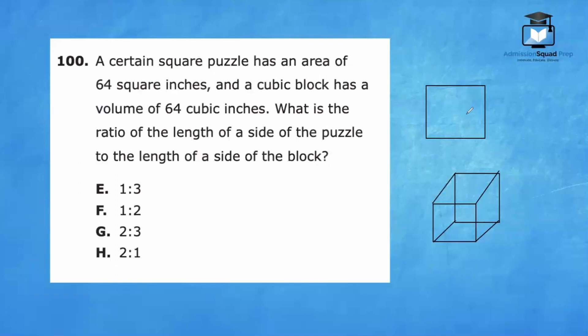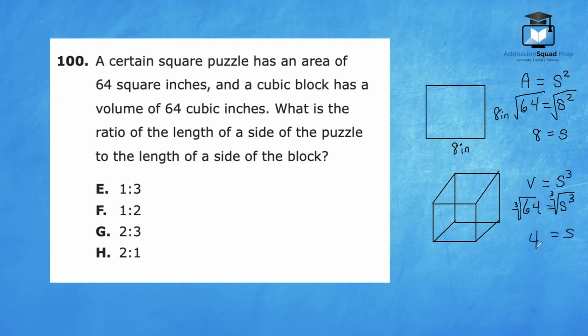If an area of a square is 64, we know that each of the sides is going to be eight. The area of a square is side squared and the area is 64. So 64 equals side squared. The inverse of squaring something is to find the square root. So the square root of 64 is eight inches. For the cubic block, the volume is 64 cubic inches. The volume of a cube is s cubed. So 64 equals s cubed. The inverse of cubing something is to find the cube root. The cube root of 64 is four. So each of the sides of the cube will be four inches.